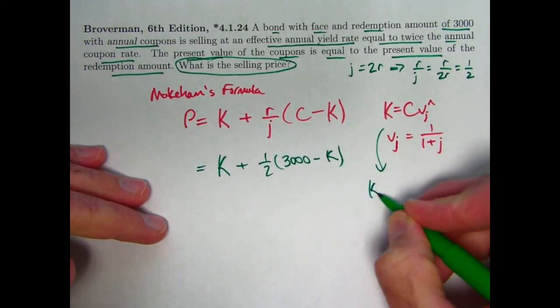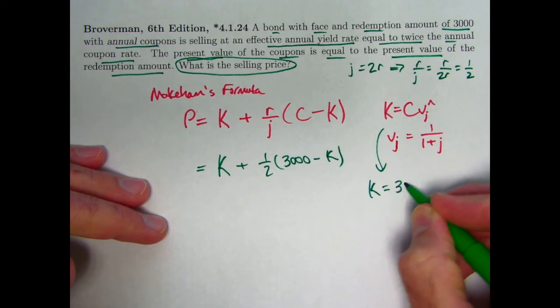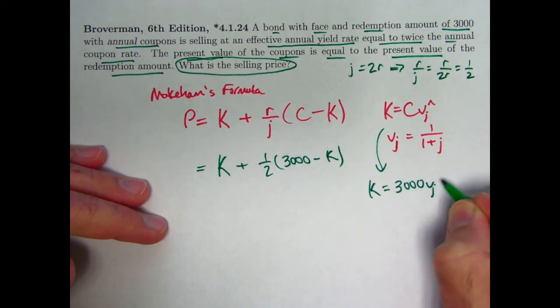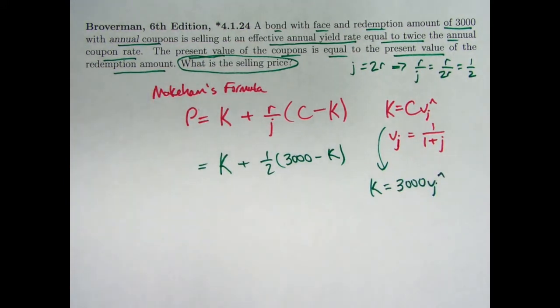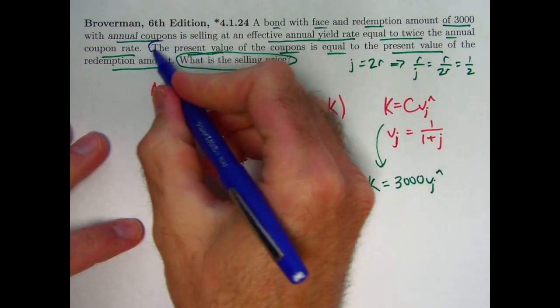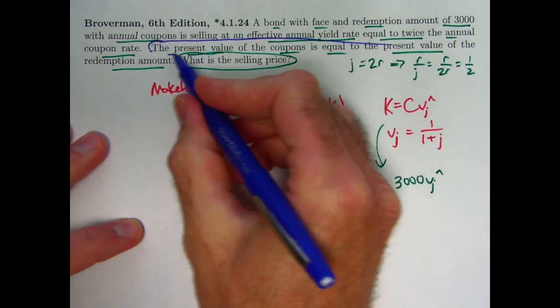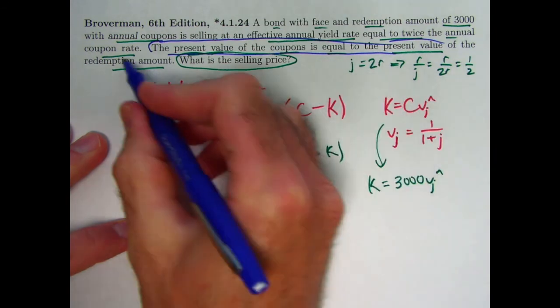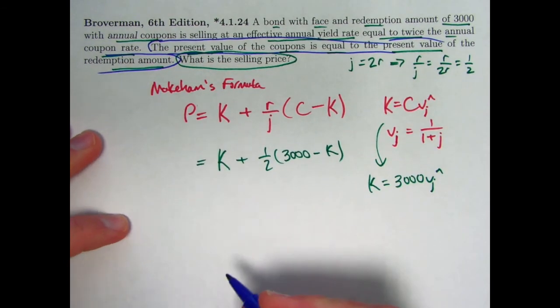Well, K is C times V to the N. That would be 3,000 times V sub J to the N. If now we could find V sub J to the N, to the N power, we could finish this problem. So let's see. Maybe that's a hint that we need to use something that has not been used yet. What have we not used yet? It's this sentence here. The present value of the coupons is equal to the present value of redemption amount. We have not used that yet.